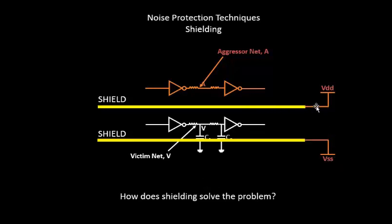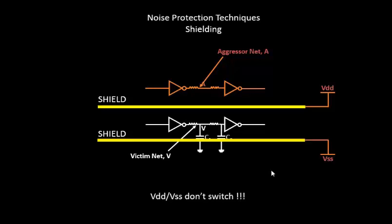The truth lies behind the concept that the shields are connected across VDD and ground. They are connected to constant supply voltages — VDD or ground — and VDD and ground don't switch. Since VDD and ground don't switch, they make sure their victims don't switch. As a result, if there are wires across the victim which don't switch, the victim is safe and protected.